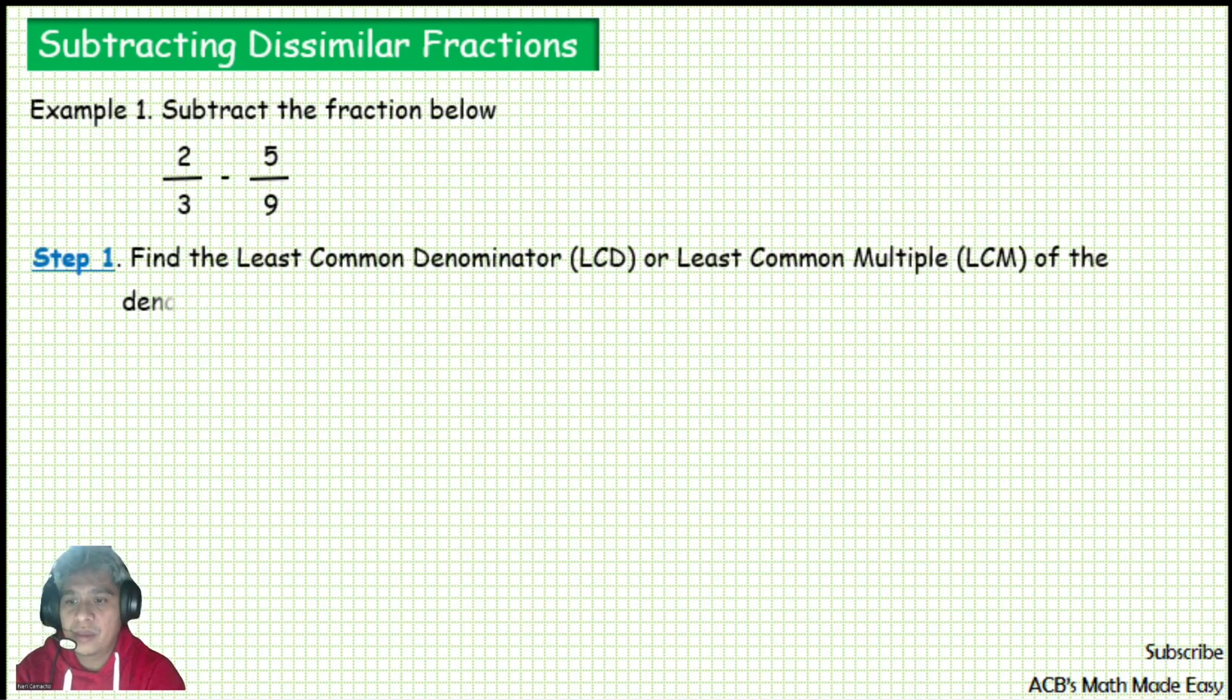The first step is to get the least common denominator (LCD) or least common multiple of the denominator (LCM). Denominator 3 can be factored out by 3 times 1, and our denominator 9 can be factored out by 3 times 3.